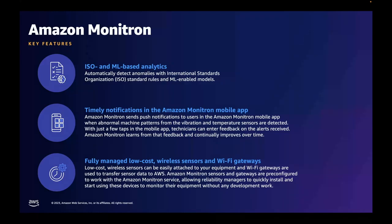Amazon Monitron has ISO and ML-based analytics where it can automatically detect anomalies with ISO standard rules and machine learning enabled models — specifically the ISO 20816-1 standard for general zone boundaries. It has timely notifications shown in the Amazon Monitron mobile app, sending push notifications to users when abnormal machine patterns from the vibration and temperature sensors are detected. With just a few taps of the mobile app, technicians can enter feedback on those alerts, and Amazon Monitron learns from that feedback and continually improves over time.